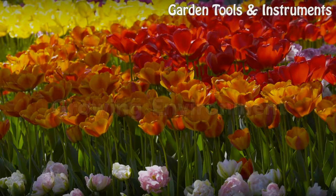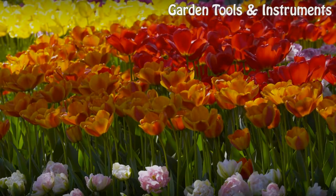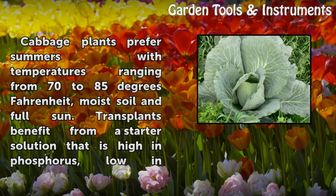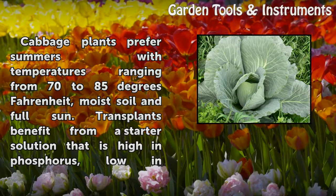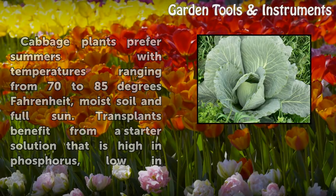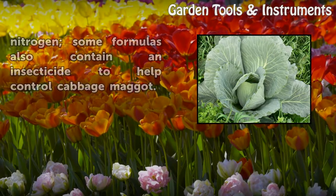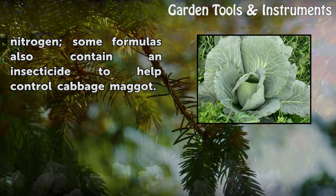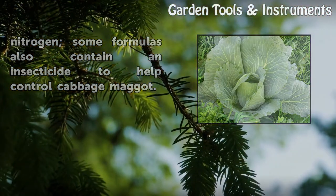Growing Environment. Cabbage plants prefer summers with temperatures ranging from 70 to 85 degrees Fahrenheit, moist soil, and full sun. Transplants benefit from a starter solution that is high in phosphorus and low in nitrogen. Some formulas also contain an insecticide to help control cabbage maggot.